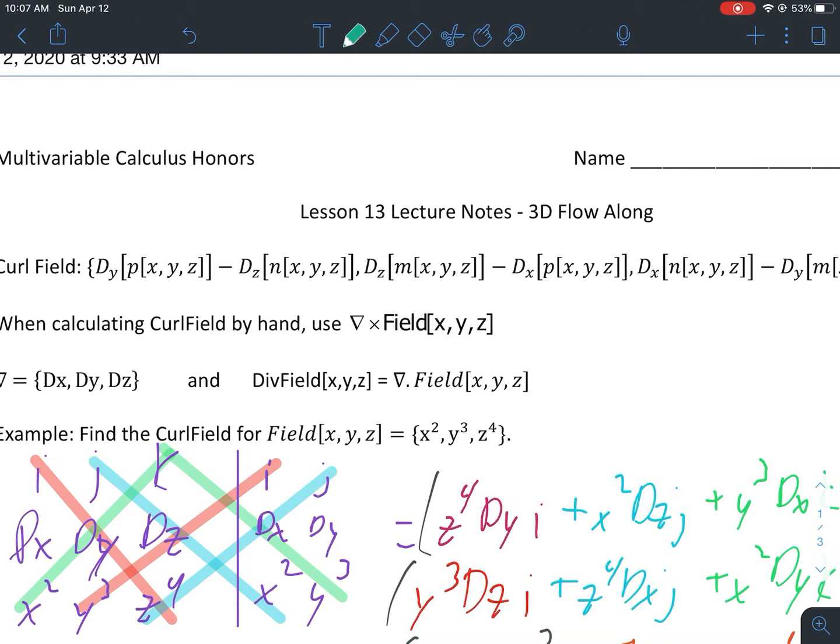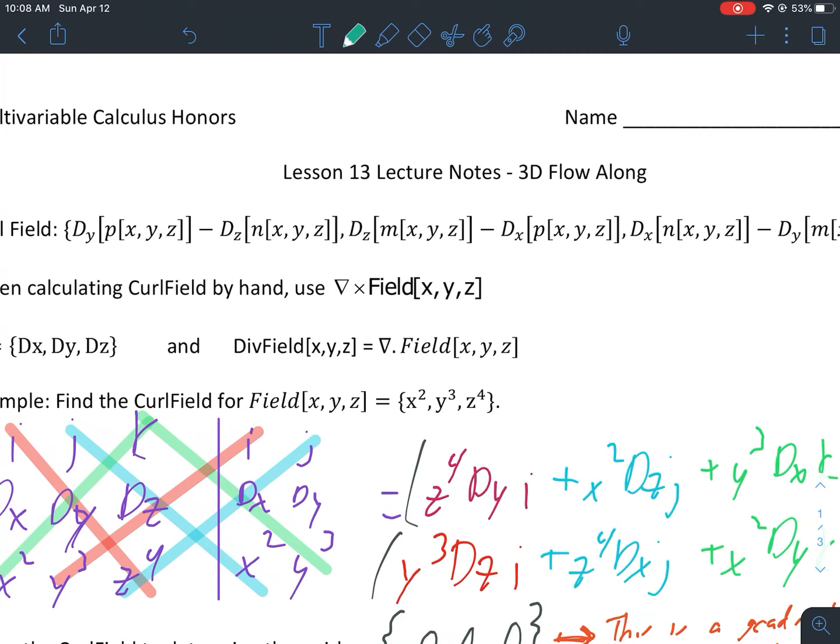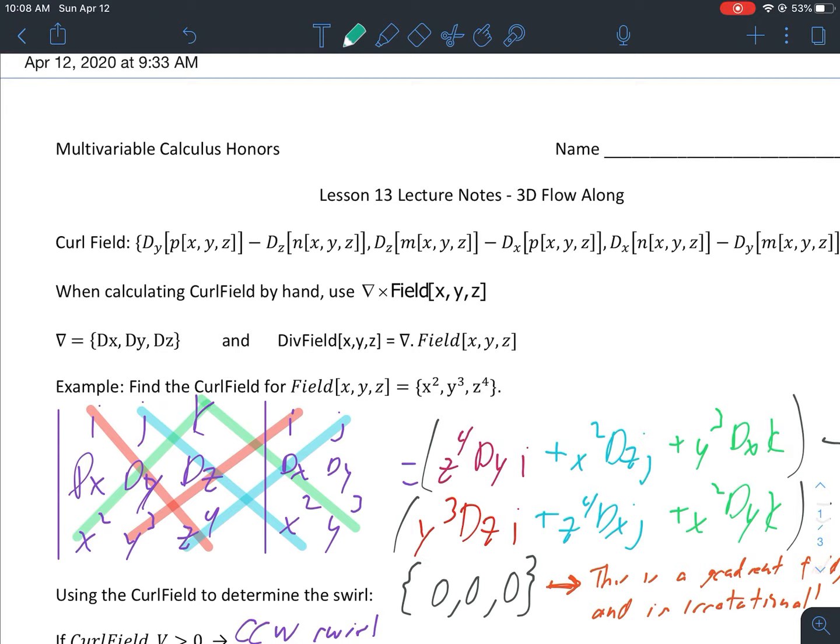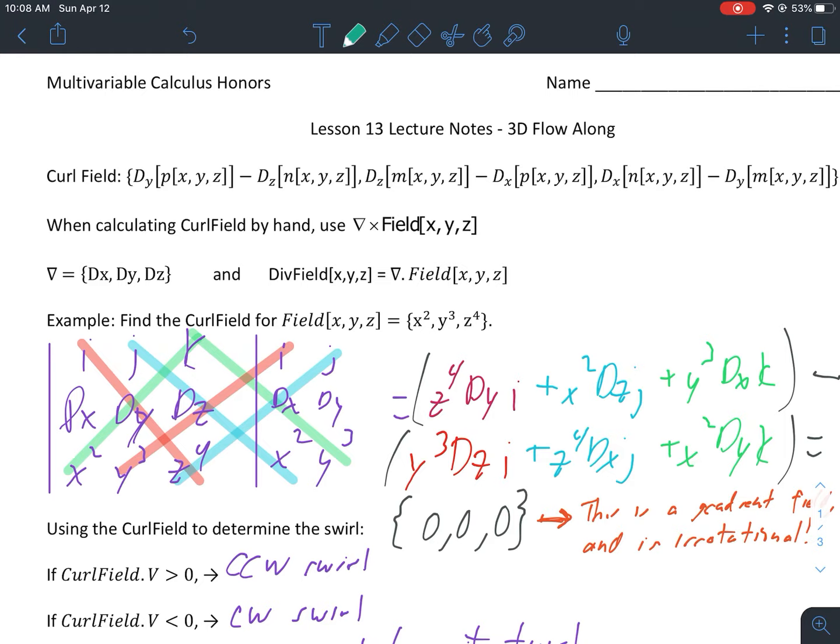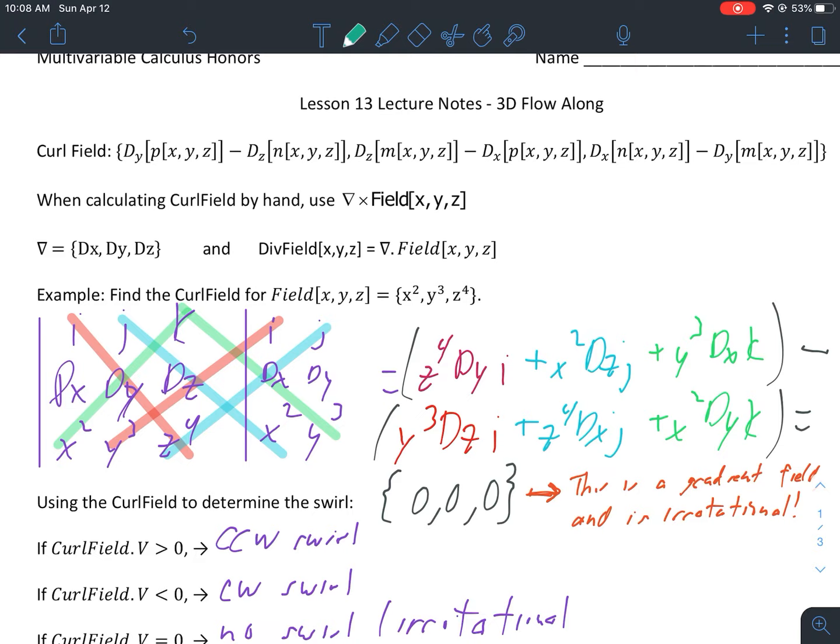We're starting with the 3D curl field. You can see there's a formula for the 3D curl field up top - basically each part is talking about the curl with respect to a specific plane. To calculate curl field by hand, use our del operator for the cross product of the field itself. Remember that del is {Dx, Dy, Dz} and we have our div field there as that field. This is an example of finding a curl field for a given field - this is a real basic field.